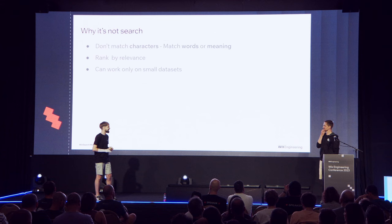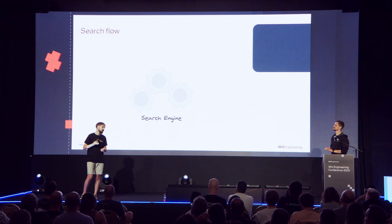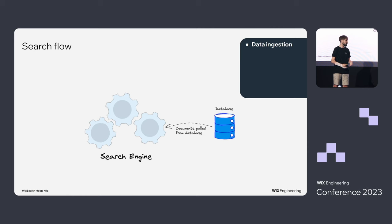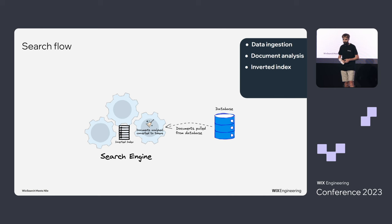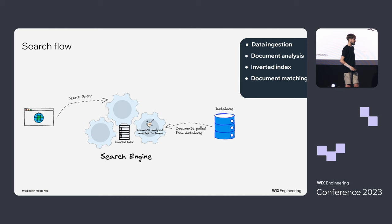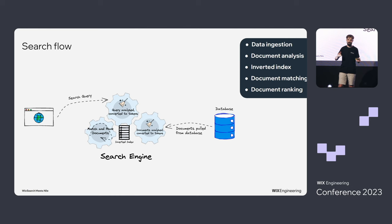So you need something better — you need a search engine. With a search engine, you pull documents from your database into the engine. Once the documents hit the search engine, they get analyzed and converted into tokens, which are stored in the inverted index. When the user sends a search query, the query also gets analyzed and converted to tokens, conveniently matched to the tokens in the index. Once the documents are matched, they are ranked and returned to the user.